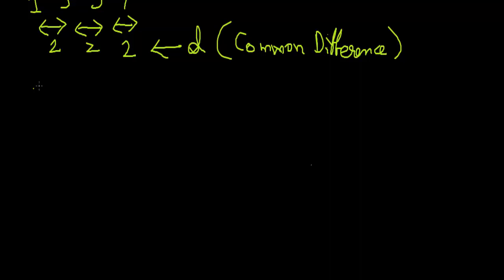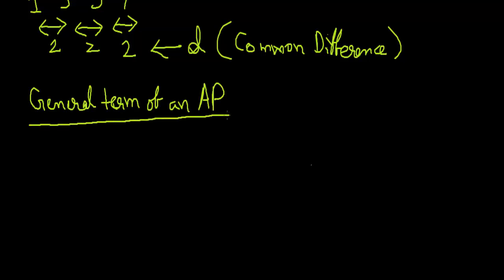Now we will see the general term of an AP. This is the formula: T_N, the Nth term, is denoted by a plus (n minus 1) times d.